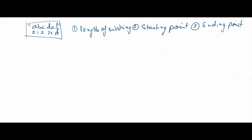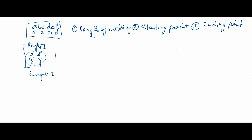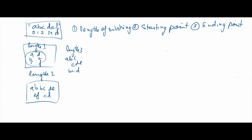How will we approach this? We can traverse every starting point and match it with every ending point, but that will be cumbersome. The best approach is to first print all substrings of length one — A, B, C, D, E, F — then all substrings of length two — AB, BC, CD, DE, EF — then length three — ABC, BCD, CDE — and so on.